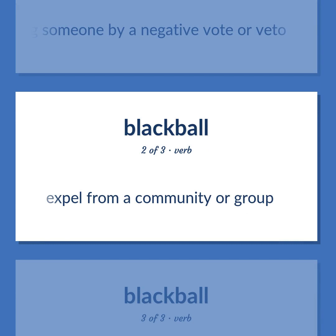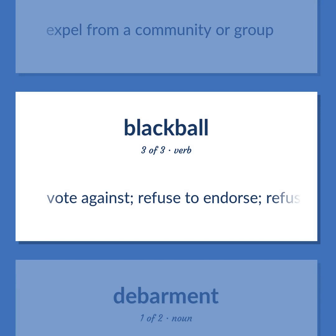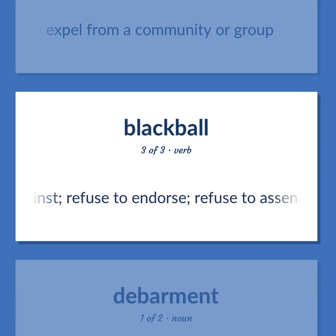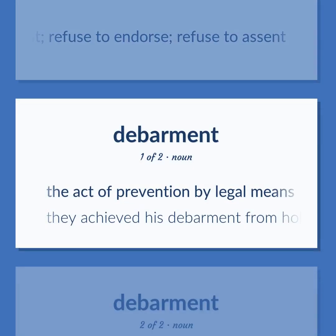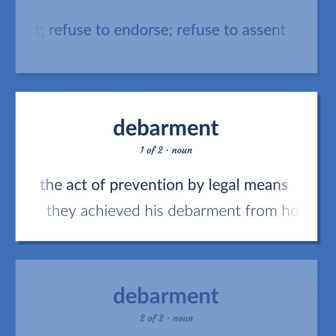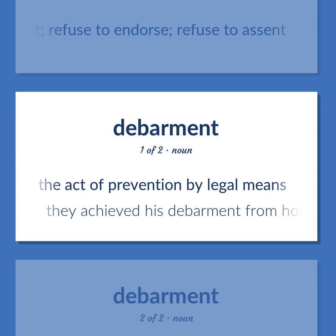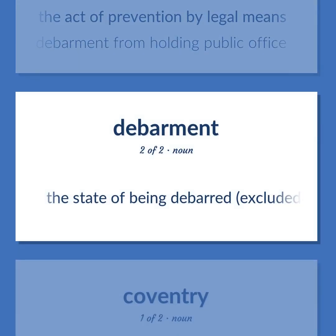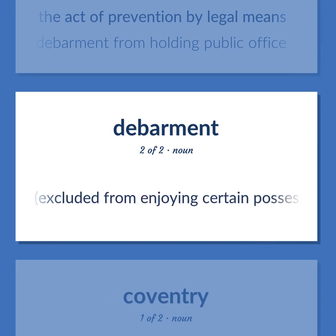Expel from a community or group. Vote against; refuse to endorse; refuse to assent. The act of prevention by legal means. They achieved his debarment from holding public office. The state of being debarred — excluded from enjoying certain possessions or rights or practices.